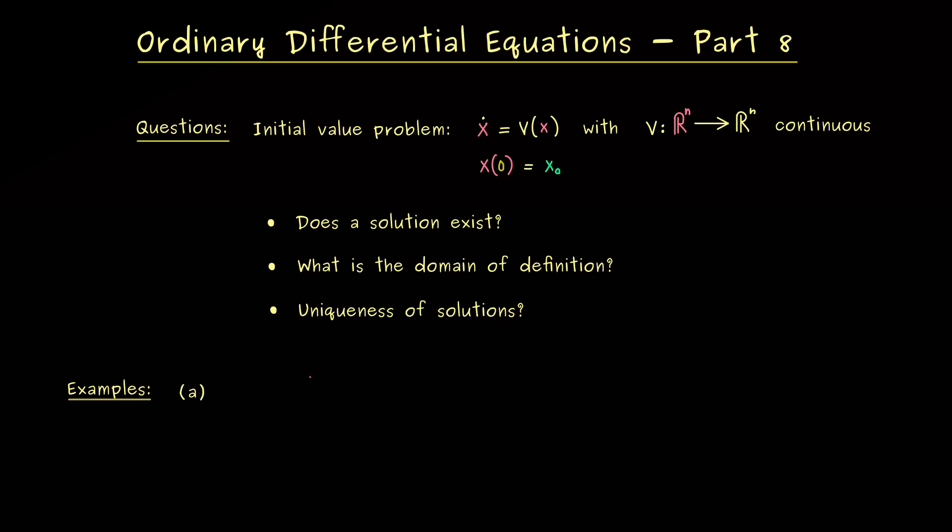So let's start with an initial value problem we have already solved in former videos. Namely x dot is equal to x squared. And as the initial value, let's choose x(0) is equal to 1. Okay, and now you should know how to solve this initial value problem, otherwise you should watch part 5 again. So we conclude that the solution exists and we call it alpha again. More precisely alpha of t is given as 1 divided by 1 minus t. So if you don't believe it, you can just calculate the derivative and check that the equation is fulfilled and also the initial value is correct.